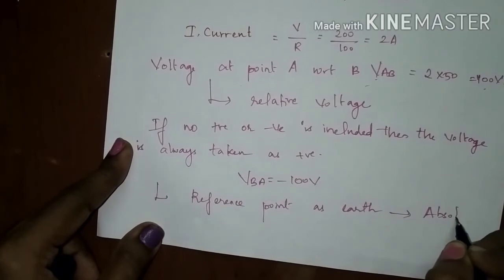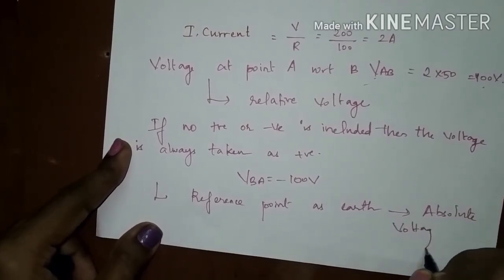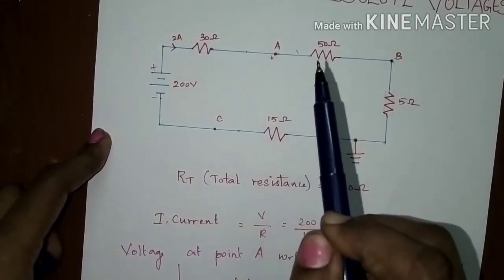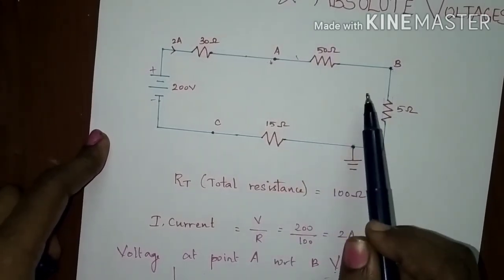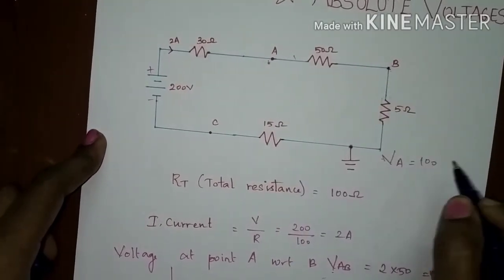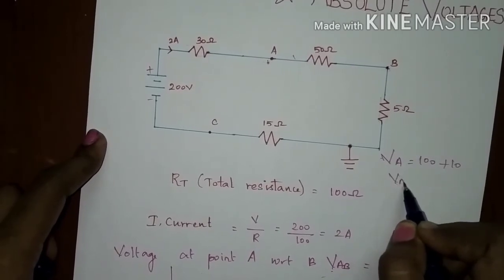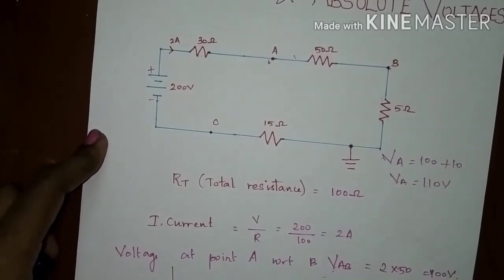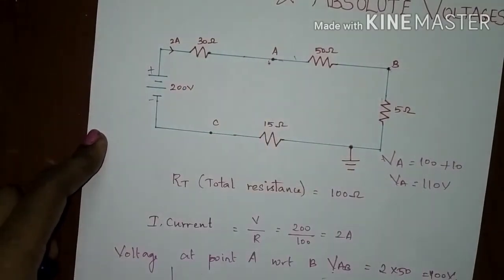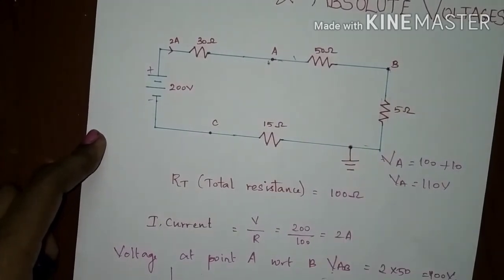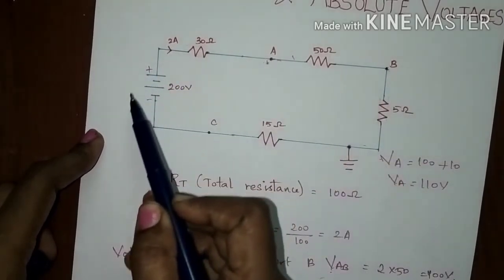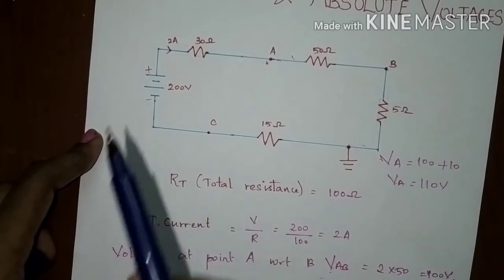If the absolute voltage of point A in this figure is required, then it will be the sum of the voltages across the 50 ohms and 5 ohms resistors. VA absolute voltage: the voltage across 50 ohms is 100 and the voltage across 5 ohms is 10, so VA is equal to 110 volts. Again, it is positive because point A is connected closer to the positive terminal of the battery with respect to earth — moving from earth point to point A passes through the positive terminal first.